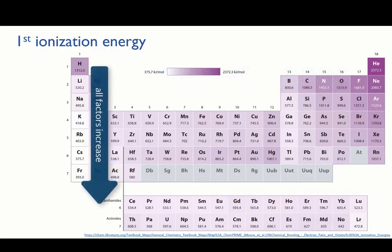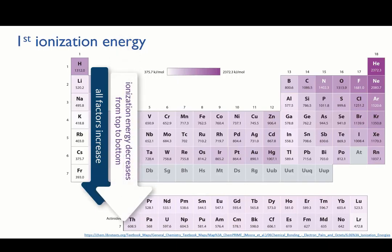Going down a group, the atomic number increases. But at the same time, the valence shell is getting further from the nucleus. Hydrogen's valence shell is electron level number one, lithium's is number two, sodium's is number three, and so on. This means that those second and third factors now come into play. The electron is further from the nucleus, and there's more shielding from other electrons in energy levels below it. So the ionization energy decreases.